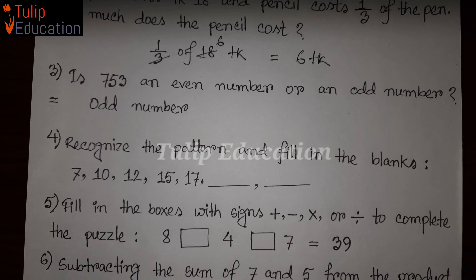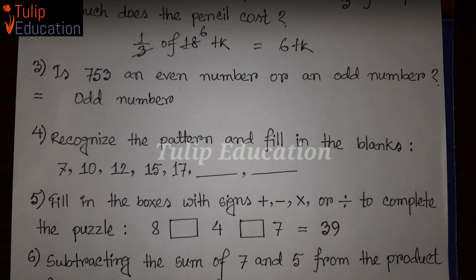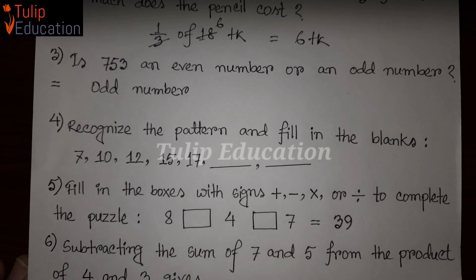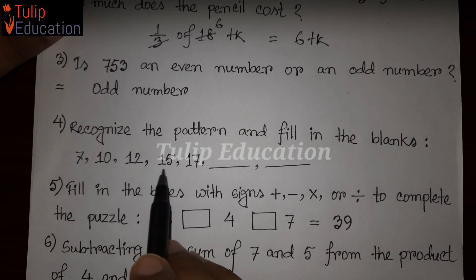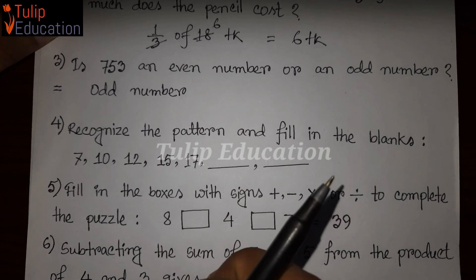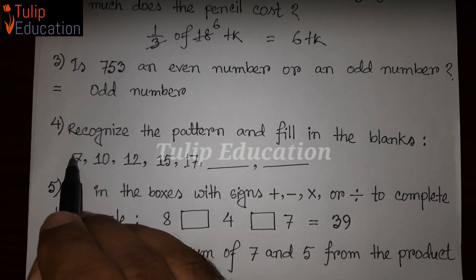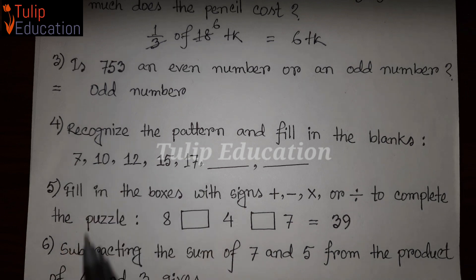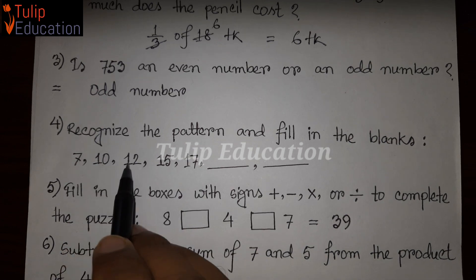Question number 4: Recognize the pattern and fill in the blanks. We have a sequence: 7, 10, 12, 15, 17. We will see how the pattern follows. Looking at 7 and 10, we add 3. Then from 10 to 12, we add 2.